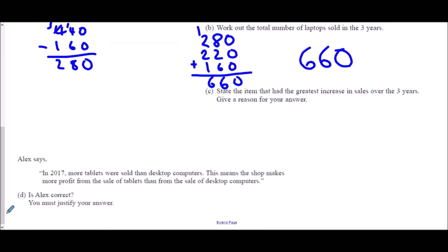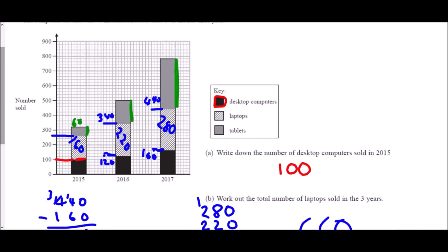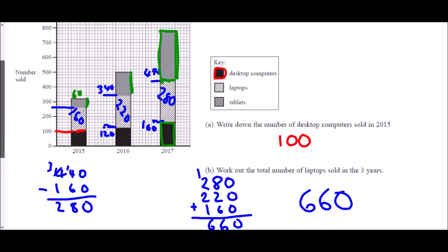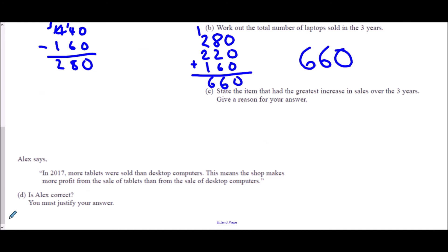The last point though is the really important one because this is a little bit of interpretation that is required. Alex says in 2017 more tablets were sold than desktop computers. This means the shop makes more profit from the sale of tablets than from the sale of desktop computers. Is Alex correct? You must justify your answer. Well the first thing here is in 2017 more tablets were sold than desktop computers. Well let's have a look. Were more tablets sold than desktop computers? Well tablets is this piece, desktop computers is this piece. So that is definitely correct. He is not wrong in that situation. They definitely sold more tablets than they did desktop computers.